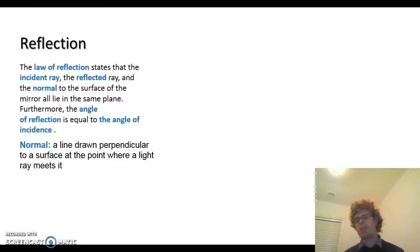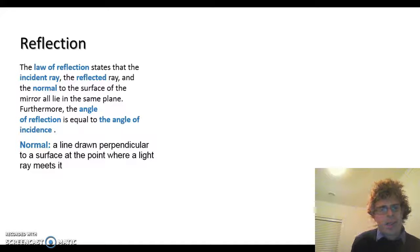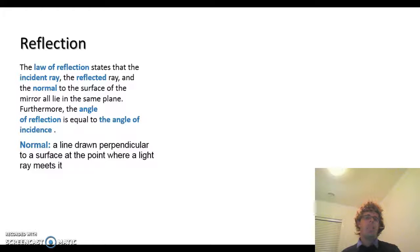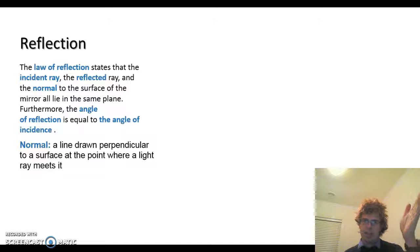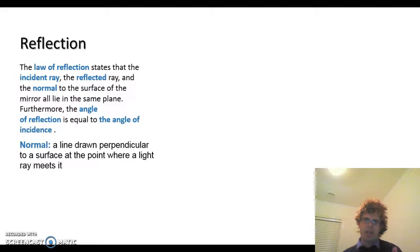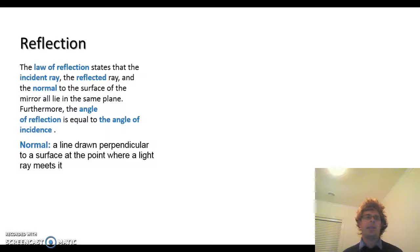So we're still looking at reflection. As in everything in science, there's a law that dictates what's going to happen to light. When we're looking at reflection, we've got the law of reflection, which states that the incident ray — the ray that's coming from the light source, so the ray that's actually coming into the mirror — and the reflected ray and the normal to the surface of the mirror all lie in the same plane. Furthermore, the part that we really need to remember is that the angle of reflection is equal to the angle of incidence.